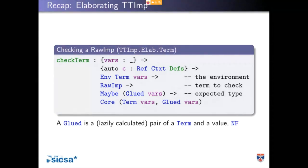So we're checking a raw IMP and implementing check term. Just to revisit what a glued type is: the expected type is always going to be one of these glued terms, which is either a value like an NF, or it's computed from a term. Glued gives us access to both of them — whichever one we happen to need — and if it's not the one we constructed, it will lazily compute it.